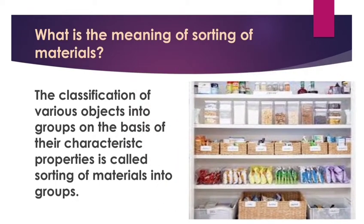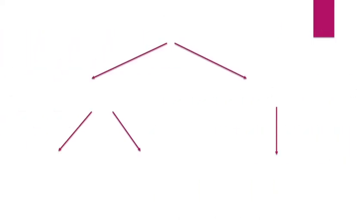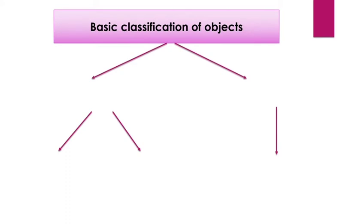Here is another example. As you can see in the given picture of a kitchen, things are nicely arranged — the pulses are kept in one place, the spices are arranged in a rack, the different types of oils are in another place, and the snacks are arranged separately. This makes things easy to find. Your mothers do this in their kitchens too, so even in their absence you can find things easily.